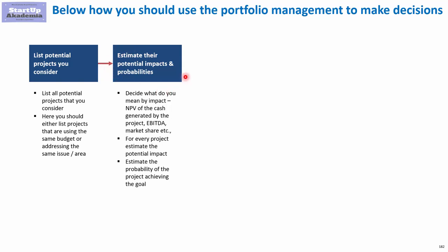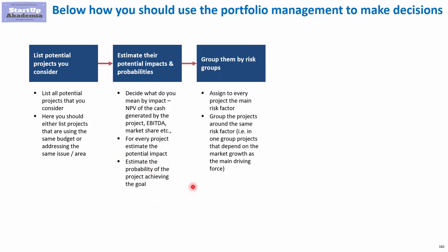It doesn't make sense to mix projects that address different problems with different budgets. The second step is to estimate the potential impact and the probability of it actually happening. First, decide how you measure impact — is it NPV, beta, or something else? Then estimate the impact value for the project, and also estimate the probability of reaching this goal, since you're not sure whether your estimate will be achieved.